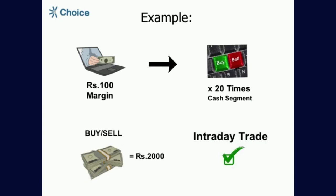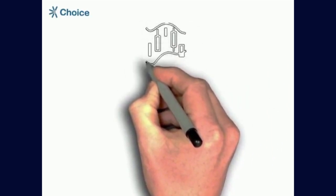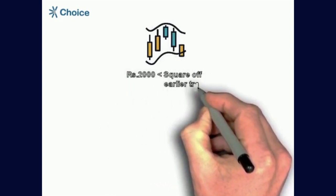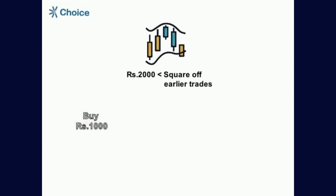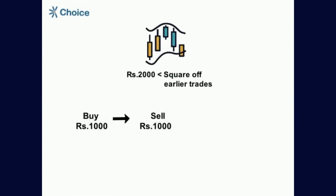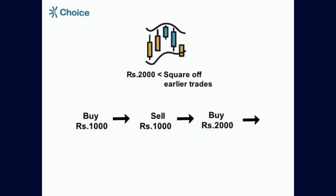Secondly, you can buy and sell multiple times also. And if you may cross Rs.2000 by square off of earliest trades. For example, you buy for Rs.1000 and then sell, and again buy for Rs.2000 and then sell, and go on. At the end of the day, you can carry over trade value of Rs.500 only.